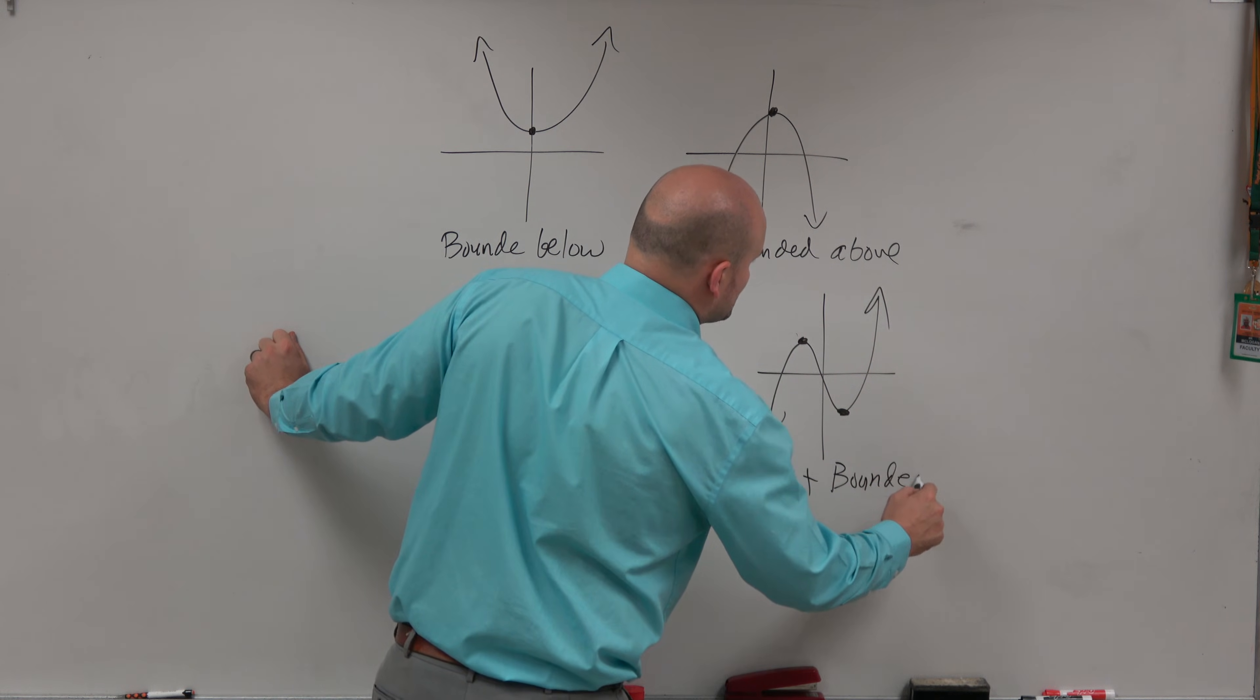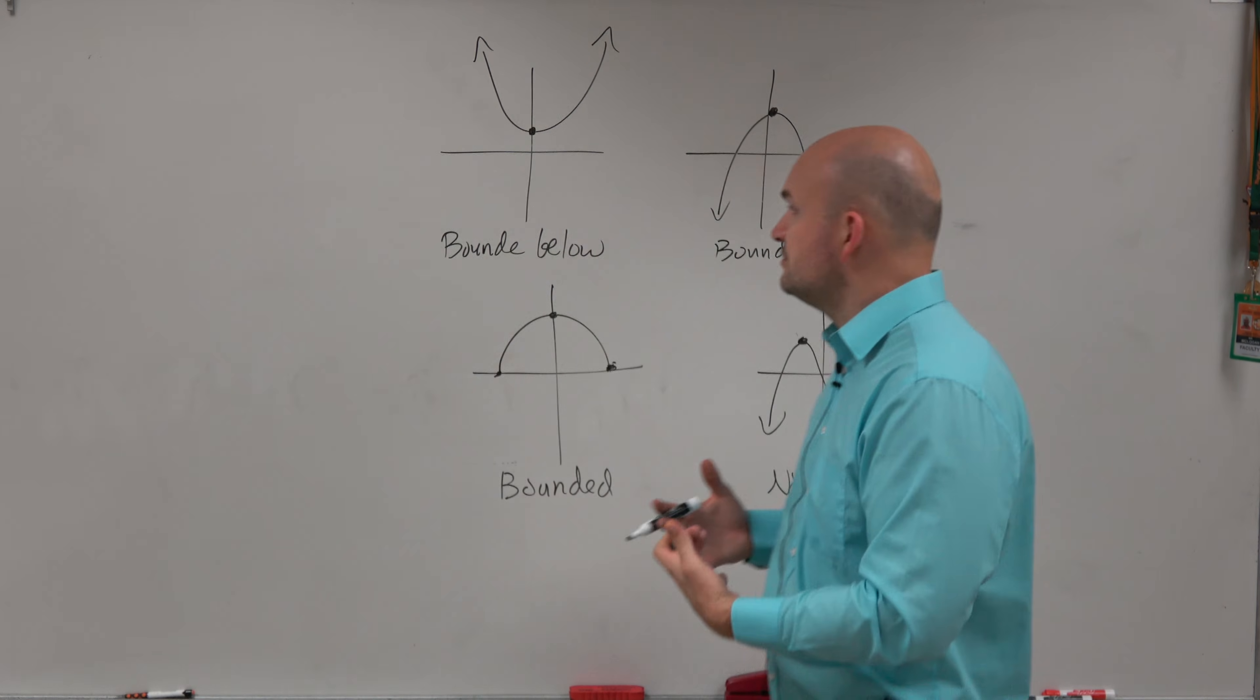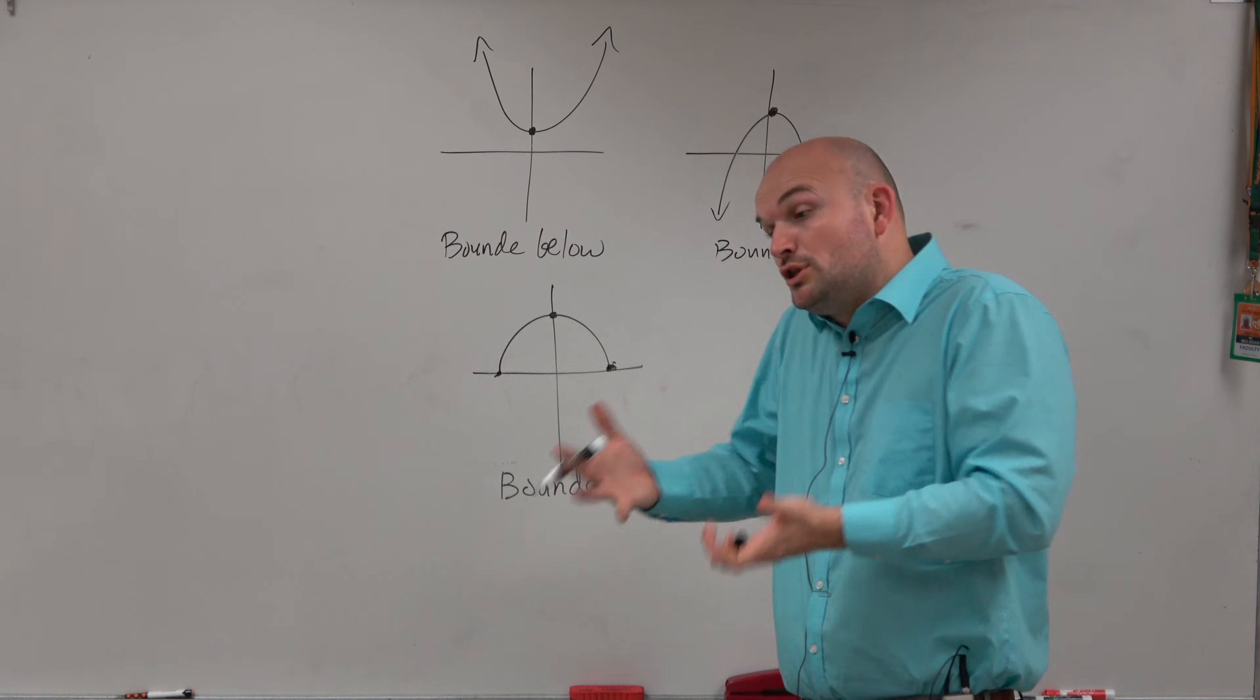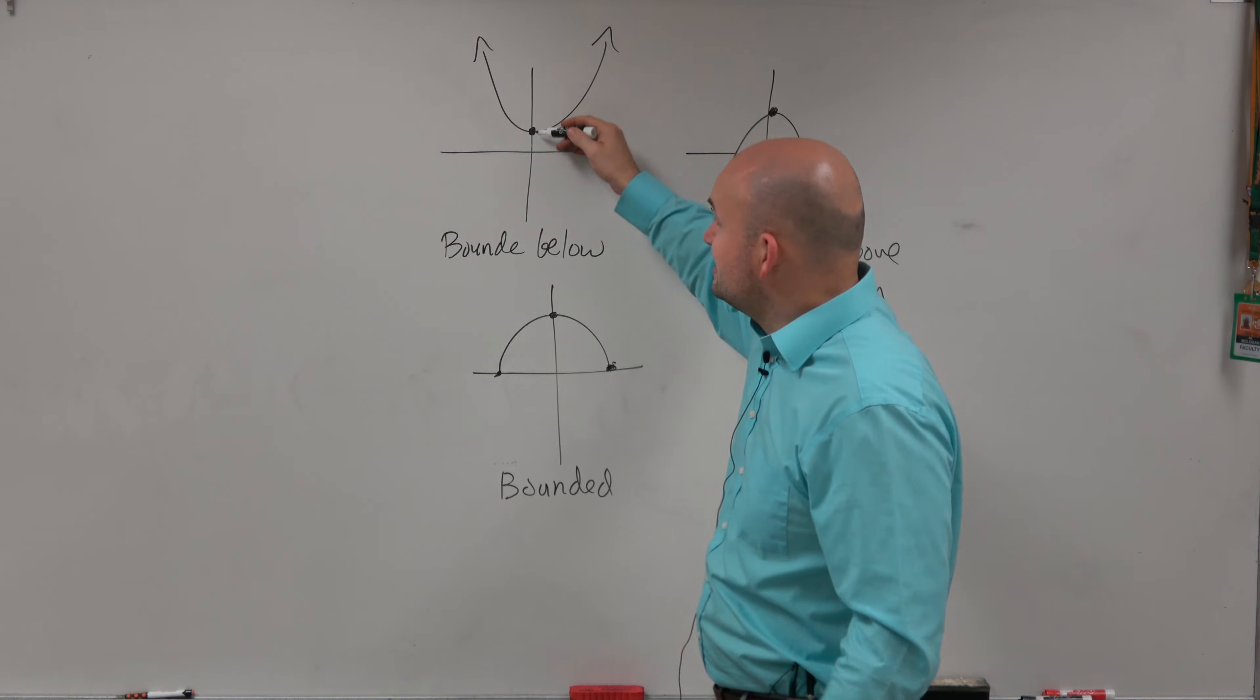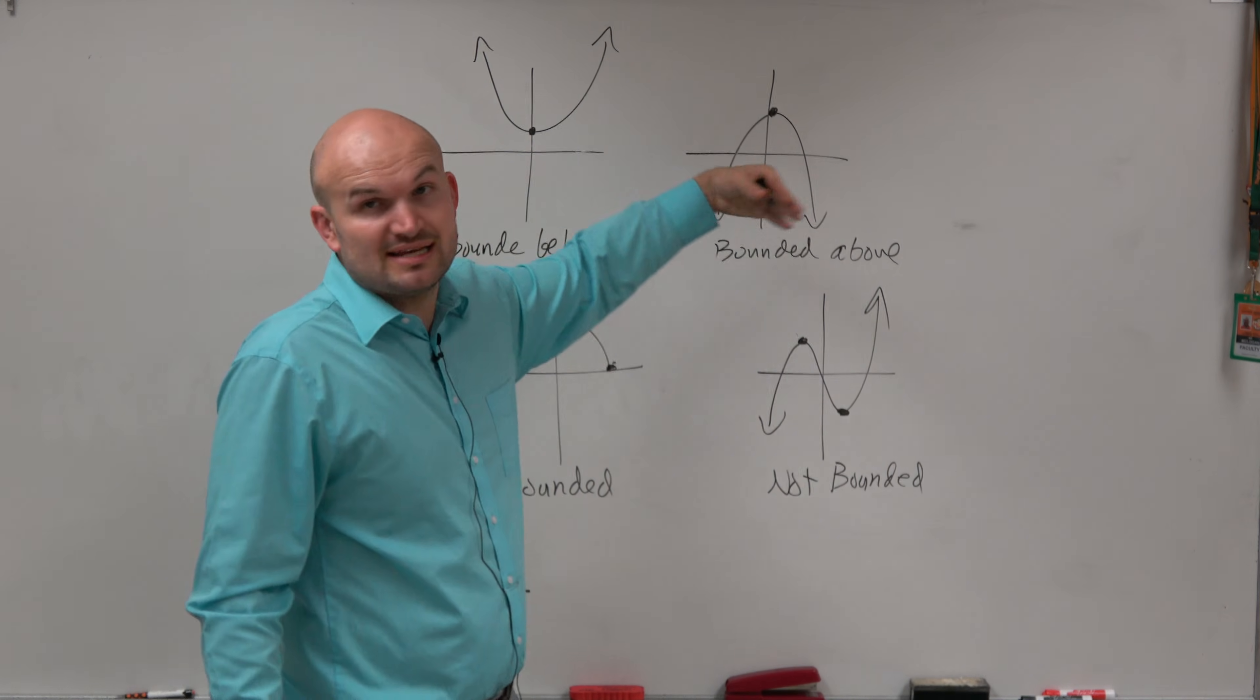So when you're trying to determine if a function is bounded or not bounded, all you basically want to do is say, does the graph go below a certain value? And if it doesn't, then it's bounded below. If the graph doesn't go above a certain value, then we say it's bounded above.